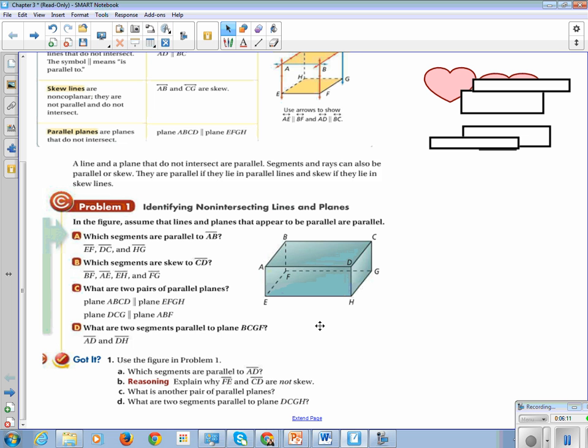Plane DCG, which is this right-hand side, is parallel to plane ABF, which is this left-hand side. And what are two segments parallel to plane DCGF? So BCGF is this back side of our box. And AD is parallel to that plane. And EH is also parallel to that plane.